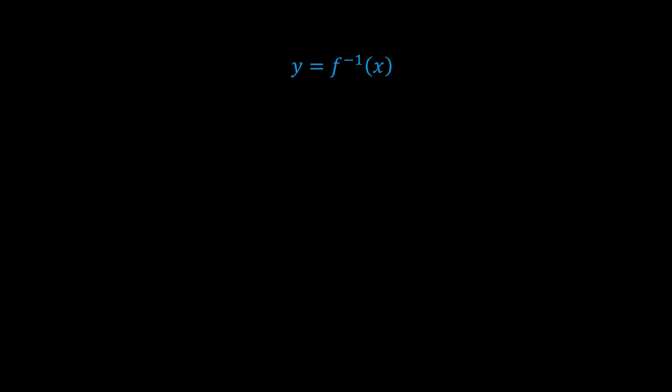Let y equals f inverse x. The reason we're doing this is because this way we can take f of both sides, and that removes the inverse function, leaving us with f of y equals x.